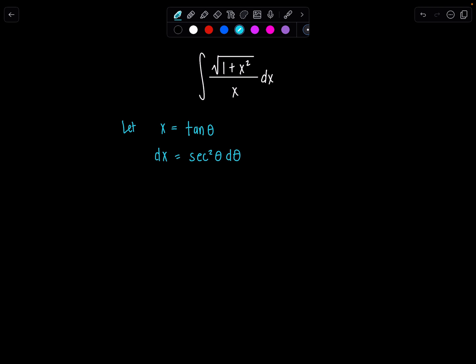And then now my job is to rewrite this integral all in terms of thetas. So here we go. So I have integral in the numerator, square root, one plus tan squared theta over, I just have tan theta now on the bottom, that's x. And then dx is secant squared theta d theta. Beautiful.